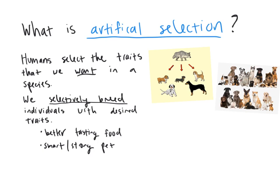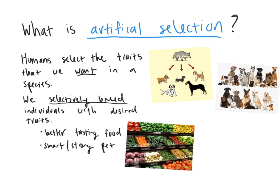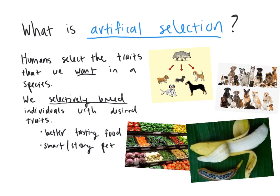Another example of artificial selection is seen in our produce aisle. Most of the fruits and vegetables at the grocery store are not how they were naturally found even 100 years ago. Tomatoes, carrots, and bananas have all been selectively bred to be better tasting. The banana you see today is very different from its natural form, which was bitter with large seeds. Through selective breeding over generations, we bred for sweeter flavor and smaller seeds until we got a product we really liked. So artificial selection is not nature selecting traits based on what's good for the environment — it's human beings artificially selecting the traits we like personally.